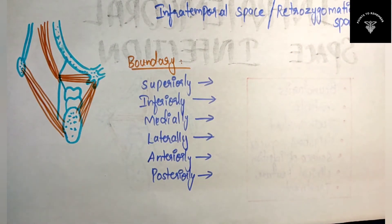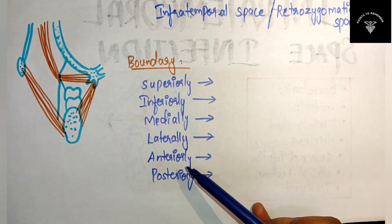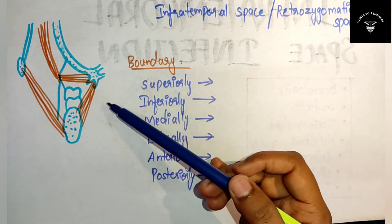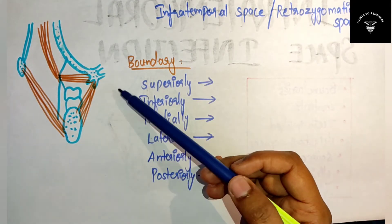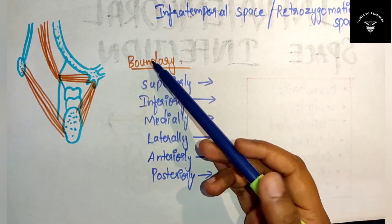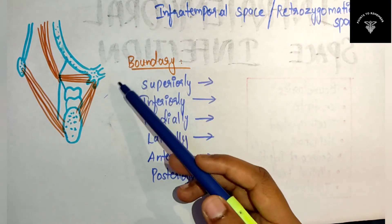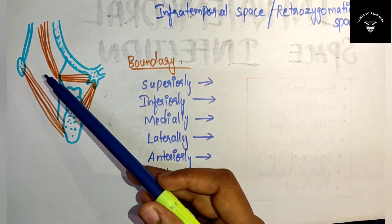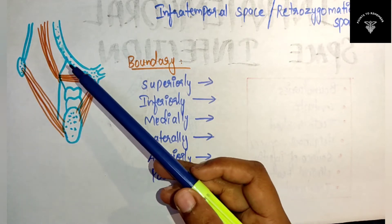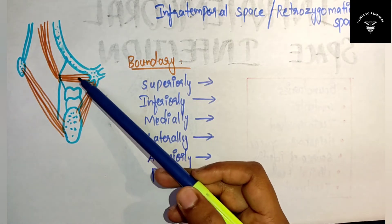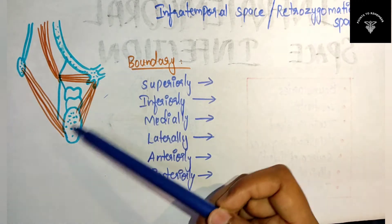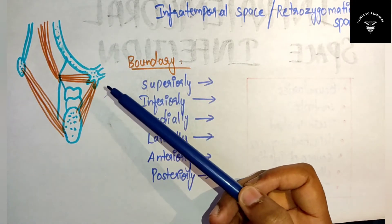Now let's see the boundaries of the infratemporal space. I have drawn the same diagram we saw for the temporal space and masticatory spaces, so it will be easy for you. With that same diagram you can identify the superficial temporal, deep temporal, infratemporal, and pterygomandibular spaces.